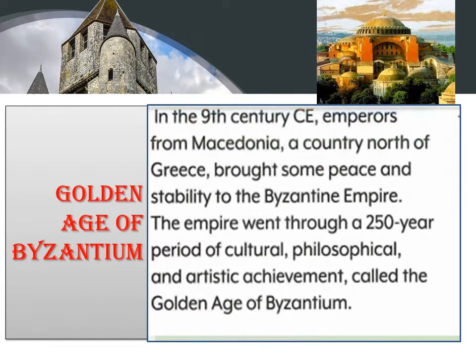Now comes the period of the Golden Age of Byzantine. The credit goes to the emperors from Macedonia, a country north of Greece, who brought peace and stability to the Byzantine Empire. The empire went through a 250-year period of cultural, philosophical, and artistic achievement — that 250 years is called the Golden Age of Byzantine. This is similar to the Islamic Golden Age, which lasted from the 8th century to the 14th century.